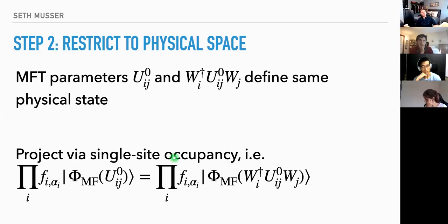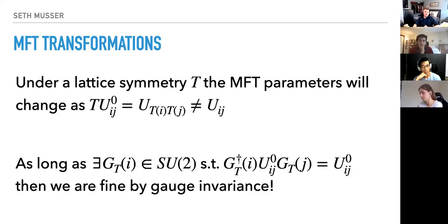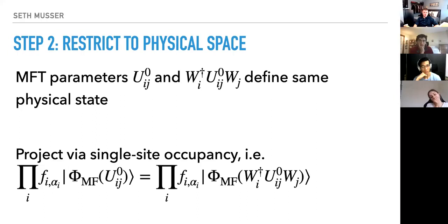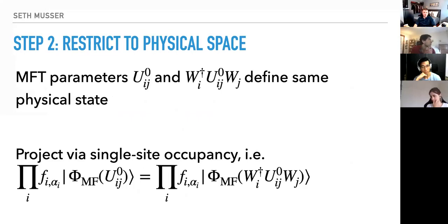For those who haven't done this type of mean field theory before: on a generic lattice you have lattice symmetries like translation, and you want to ensure your mean field parameters transform in a reasonable way under those. You make sure they transform correctly under gauge fields, and this takes care of the projection.